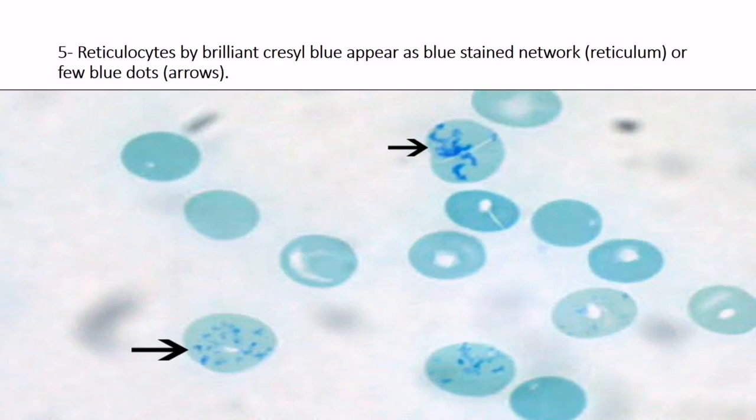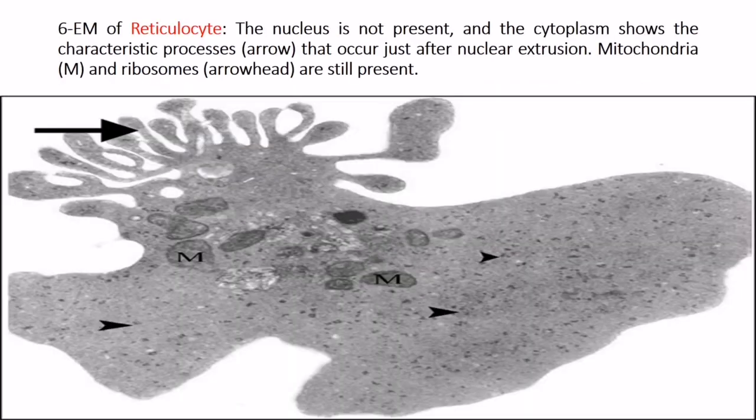Reticulocytes stained with brilliant cresyl blue appear as a blue-stained network (reticulum) or few blue dots, marked by arrows. In the electron microscopic picture of reticulocytes, the nucleus is not present, and the cytoplasm shows the characteristic appearance that occurs just after nuclear extrusion, with mitochondria and ribosomes still present.